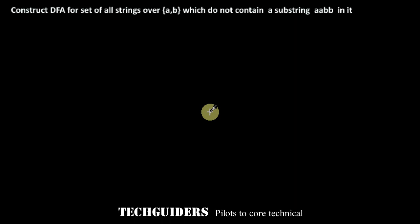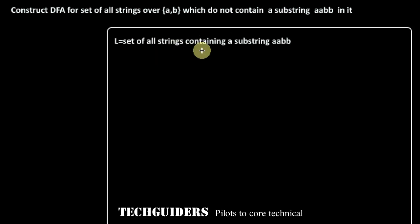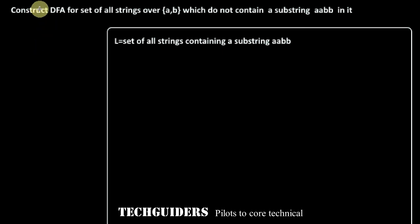Construct a DFA for the set of all strings over {A, B} which do not contain the substring AABB. We can see this language as the complement of the language containing substring AABB. So instead of constructing the DFA for this language directly, we can construct DFA for that language and then find its complement.